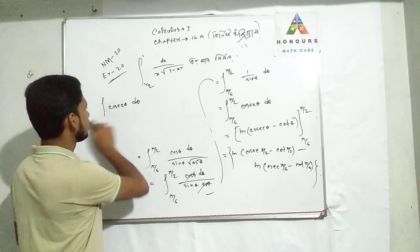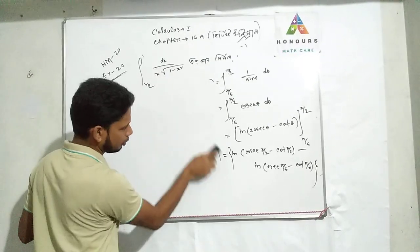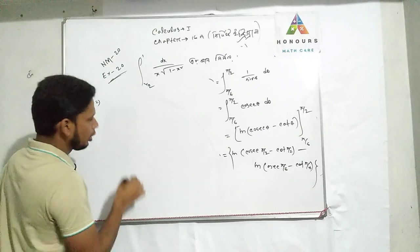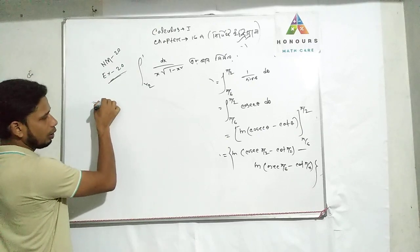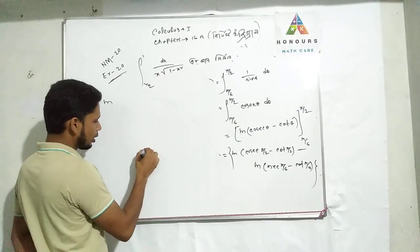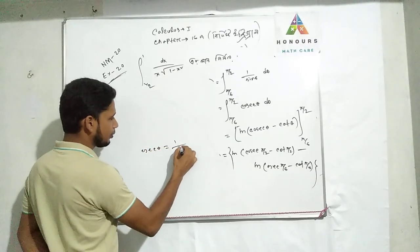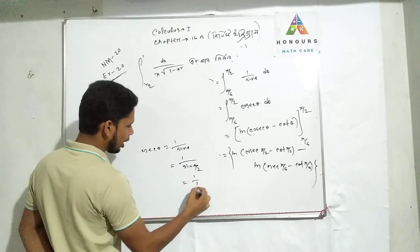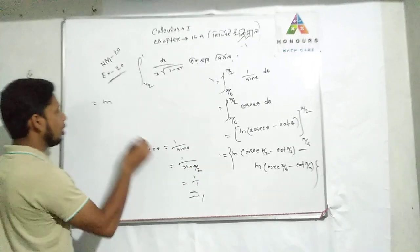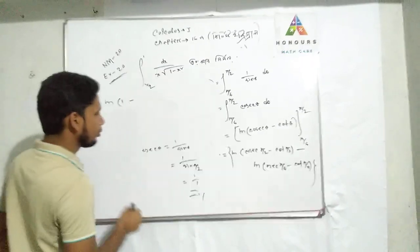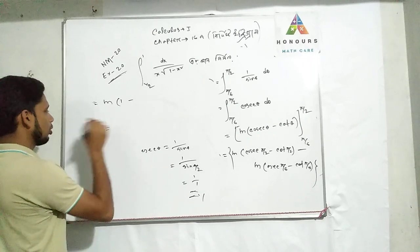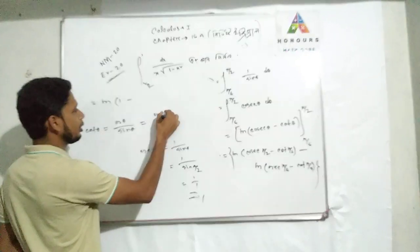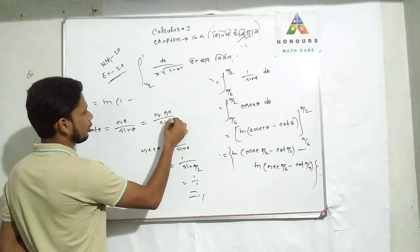Now, cosec is 1 over sin theta. At theta equals 90 degrees, sin 90 equals 1, so cosec 90 equals 1 over 1 equals 1. And cot theta equals cos theta over sin theta, so cot 90 equals cos 90 over sin 90 equals 0 over 1 equals 0.